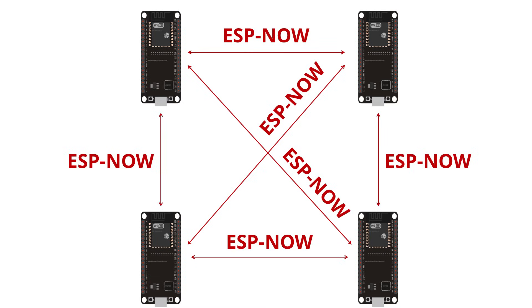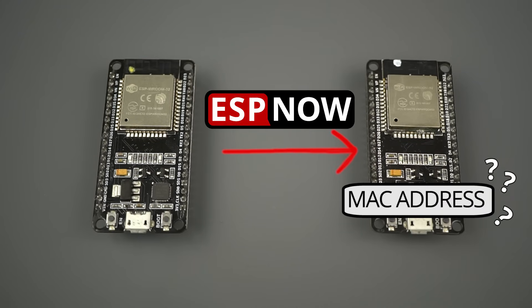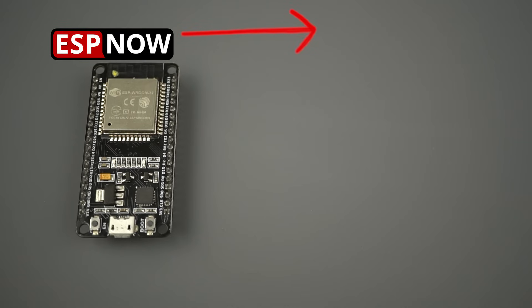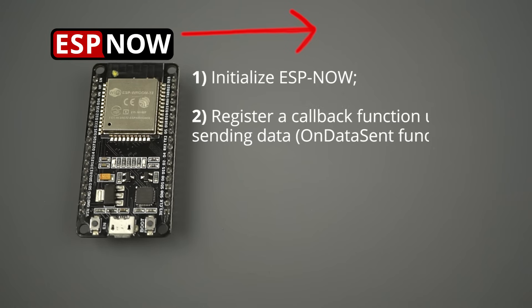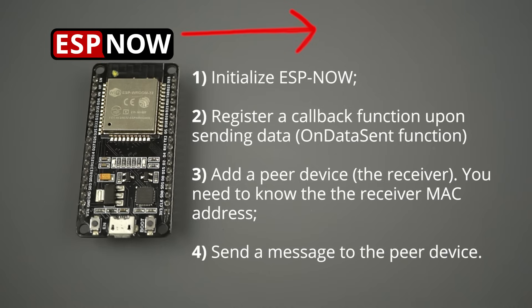To send a message via ESPNOW to another board, you need to know the MAC address of the board you want to send the data to. We provide a sketch that you can upload to your boards to get their MAC addresses. To send data to another board, you need to follow these steps in your code: initialize ESPNOW, register a callback function upon sending data — the onDataSend function will be executed when a message is sent and can tell us if the message was successfully delivered or not — add a peer device (the receiver, for which you need to know the receiver MAC address), and finally, send a message to the peer device.